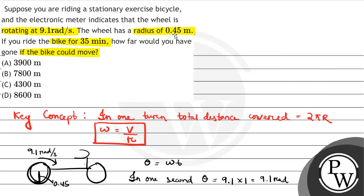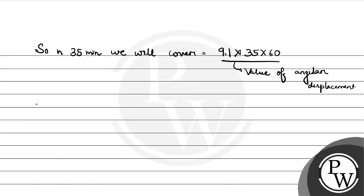The radius is 0.45. So in one turn, total distance covered equals 2πr, which is 2 into 3.14 into 0.45, which equals 2.826 meters.